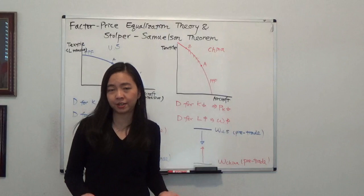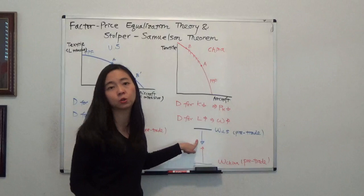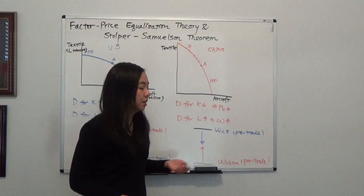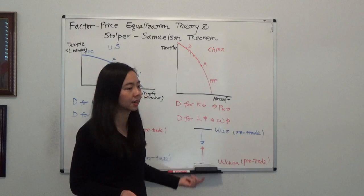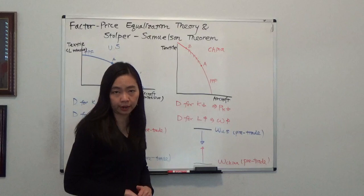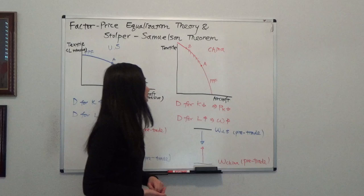In reality, we know that there is no 100% wage equalization, but we know that's the direction. Indeed, our unskilled workers' wages go down and a lot of them lose their jobs. And in China, the opposite is happening — their workers are demanding better working conditions and higher wages. So indeed, the wage for unskilled workers in China is going up.